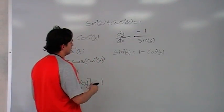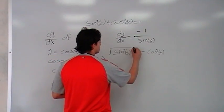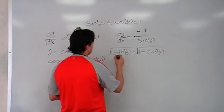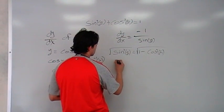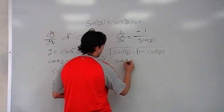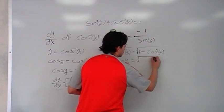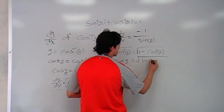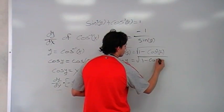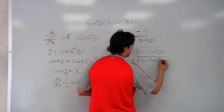Now, we're going to take the root of both sides. Now, we're going to end in having sin y equals square root of 1 minus cos squared y.